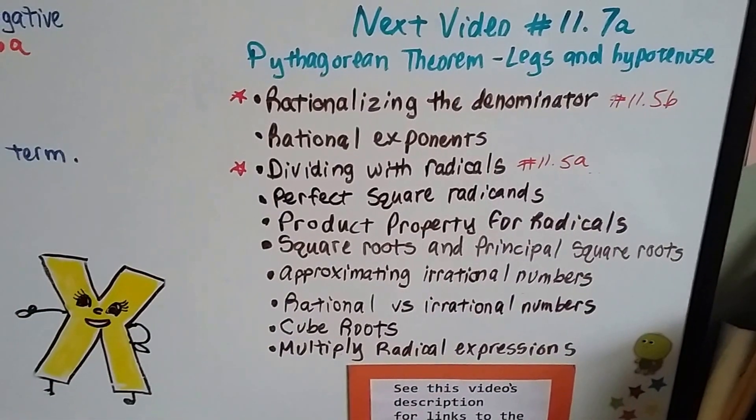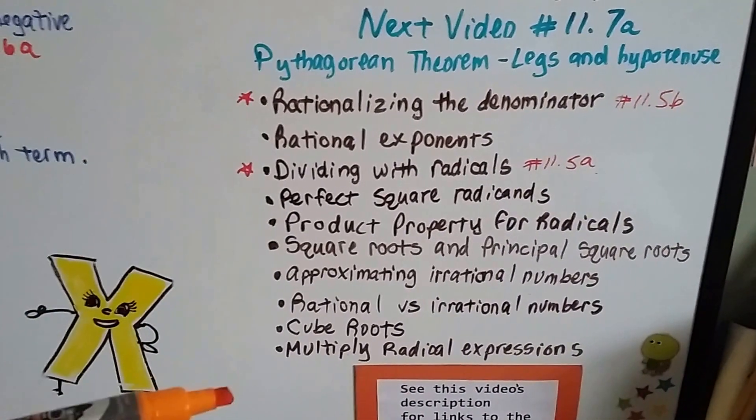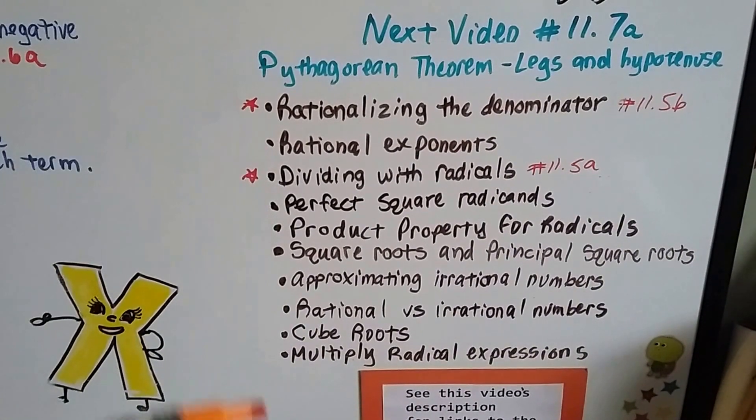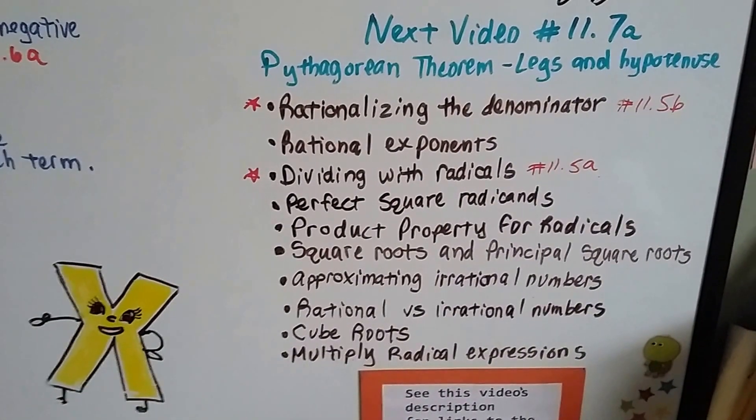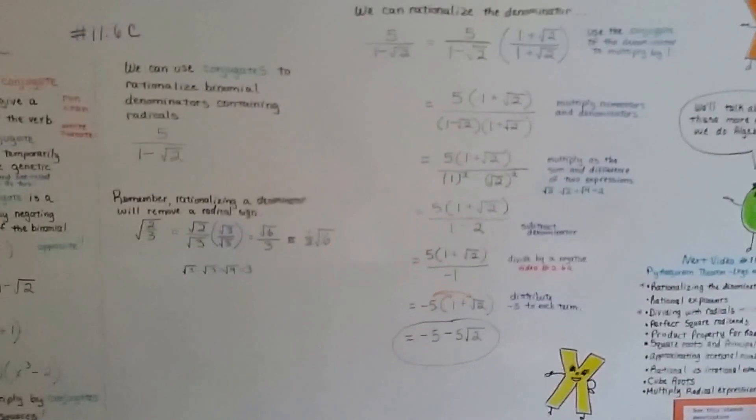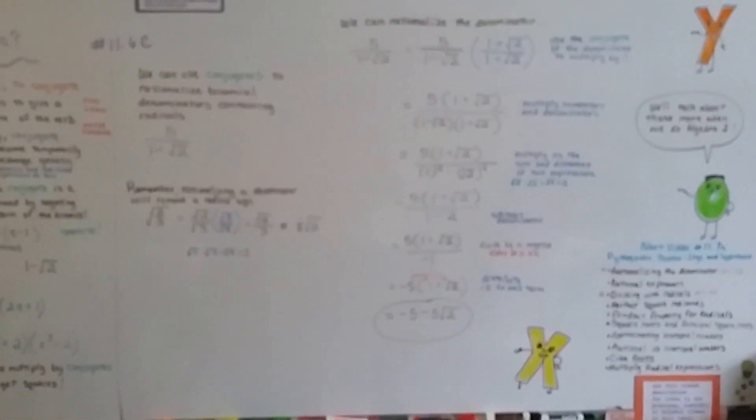Of course, with all the other ones from chapter 11, talking about rational numbers and radicals. Okay? So, let's talk about the Pythagorean theorem. I hope this was helpful, and I'll see you in the next video. Bye.